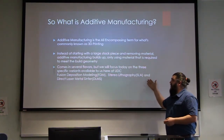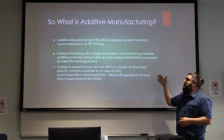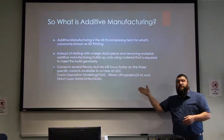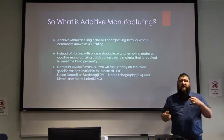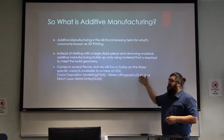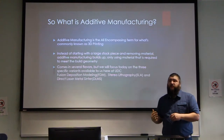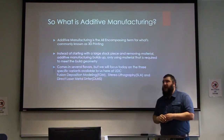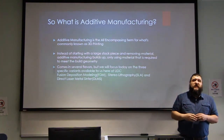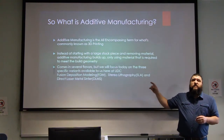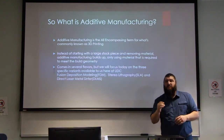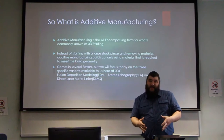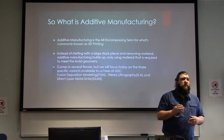Additive manufacturing comes in several flavors. We're going to focus today on the three specific variations available to us here. That's fused deposit modeling — the kind most people think of, the plastic printer. There's SLA, which is stereolithography — that's resin printing, fairly new, and we also have that just now available to us. And there's the direct laser metal sintering. On the third floor behind the red doors with the giant warning signs, that's a metal 3D printer. That one is not readily available to everyone, and we'll talk about why.